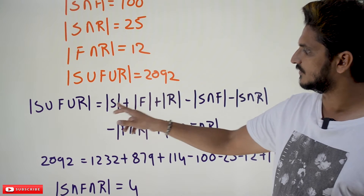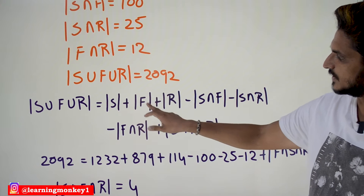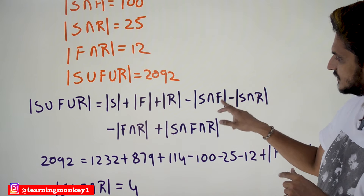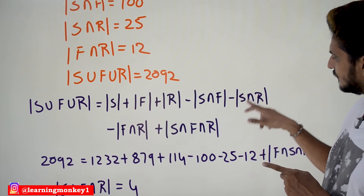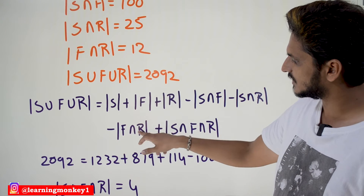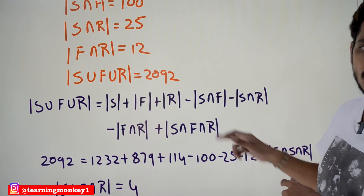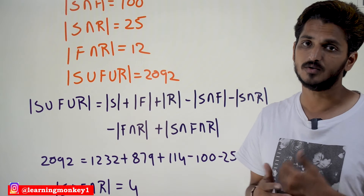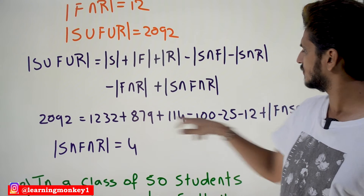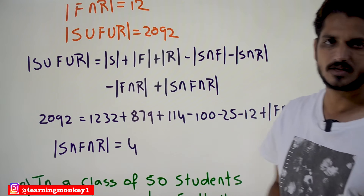From the Principle of Inclusion and Exclusion formula discussed in the last class: |S ∪ F ∪ R| = |S| + |F| + |R| − |S ∩ F| − |S ∩ R| − |F ∩ R| + |S ∩ F ∩ R|. Applying the formula: 2092 = 1232 + 879 + 114 − 100 − 25 − 12 + |S ∩ F ∩ R|. We rearrange to solve for the unknown intersection.